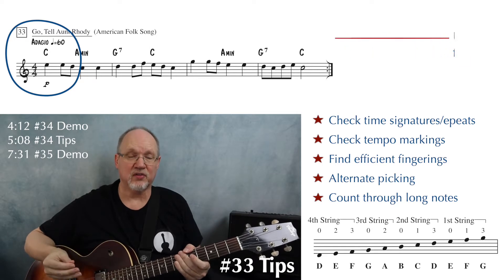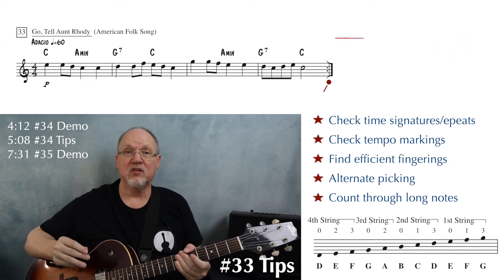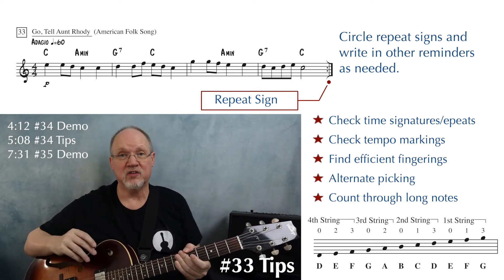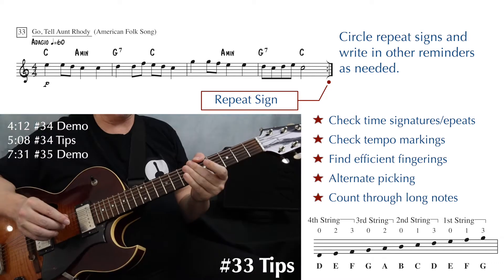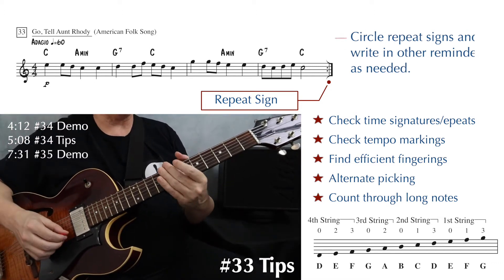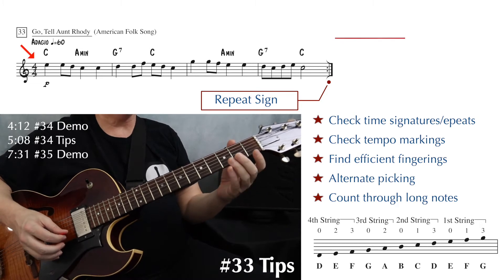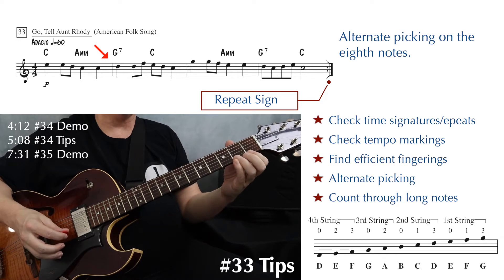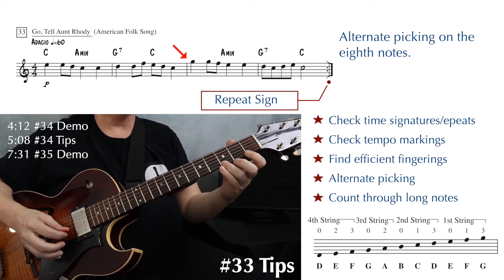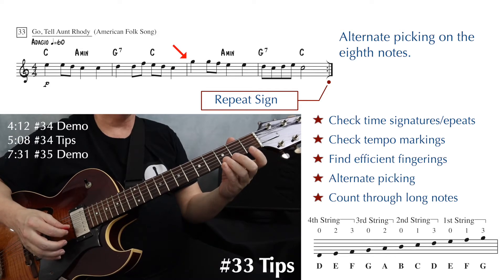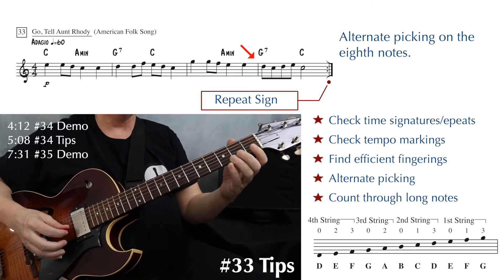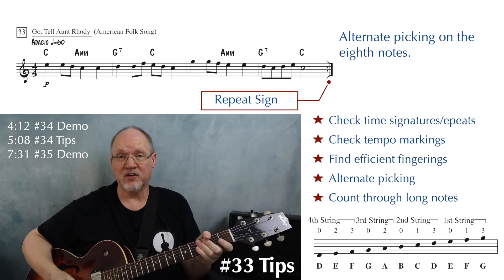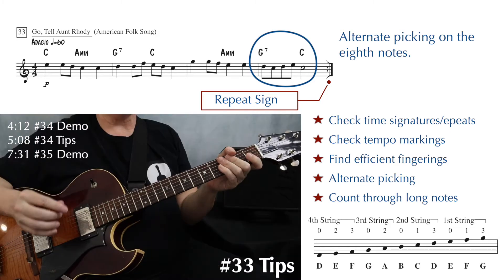One, two, three, four. Also make sure you're looking through your music for repeat signs. We do have a repeat sign at the end of this one, so you just play it twice. Using a metronome to figure out how fast 60 is: one, two, three, four. Then we repeat and do all that again. Not much to talk about here as far as notes. Just make sure you're using alternate picking — down, up, down, up — whenever you have your eighth notes.